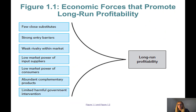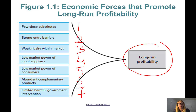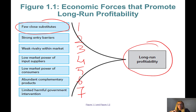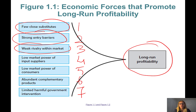Let's talk about economic forces that promote long-term profitability. Seven factors will impact long-run profitability. Number one: not having many close substitutes. If you have few close substitutes, that's an advantage — people will have few choices but to purchase from you, meaning demand for your good has inelastic properties. Number two: strong entry barriers — it's not easy for companies to enter the market and take a share of the pie. Number three: weak rivalry within the market. If there is more competition and rivalry, market participants will try to keep prices low, which will impact your profits.